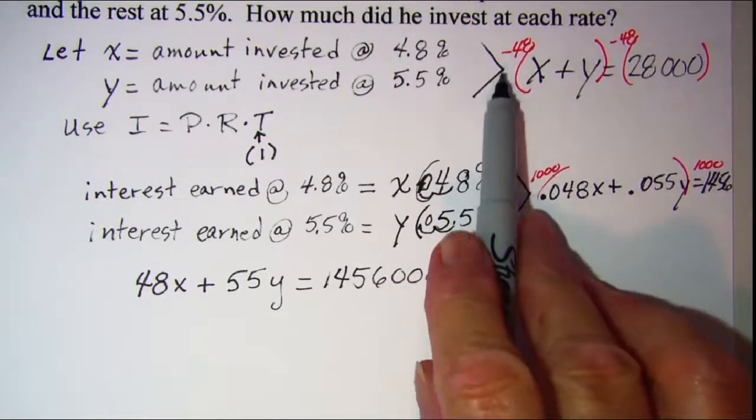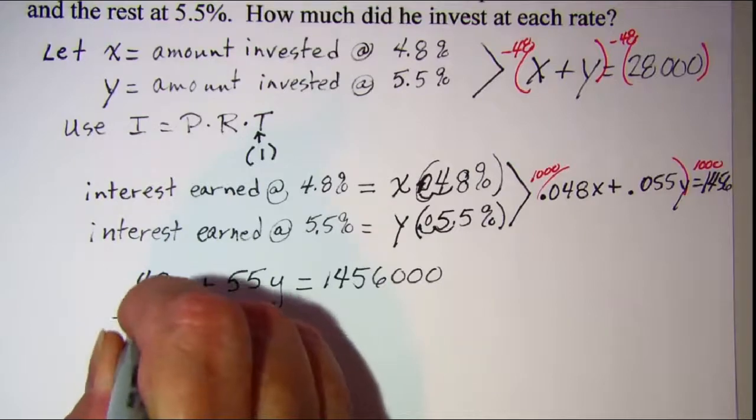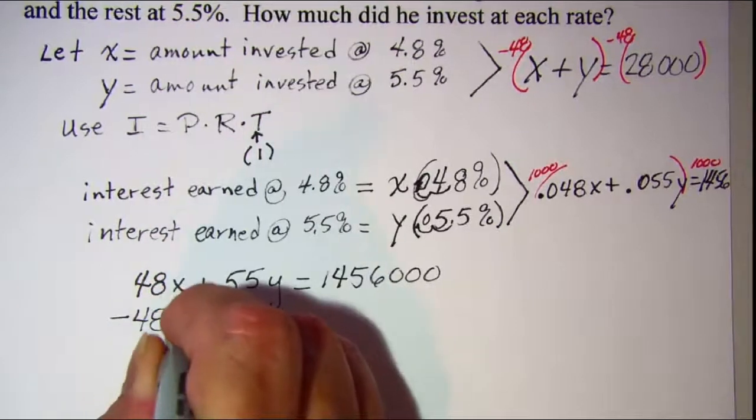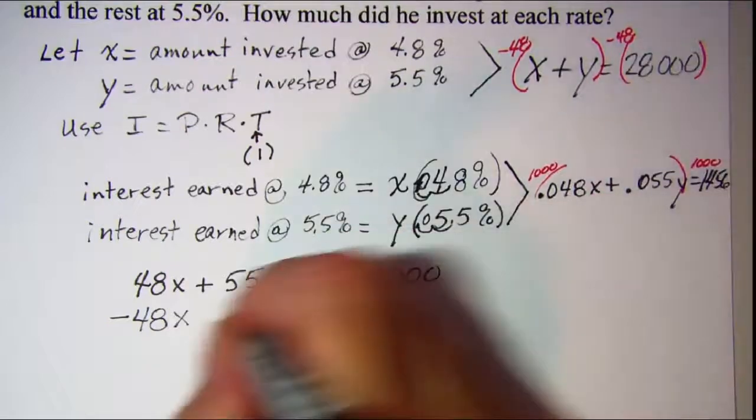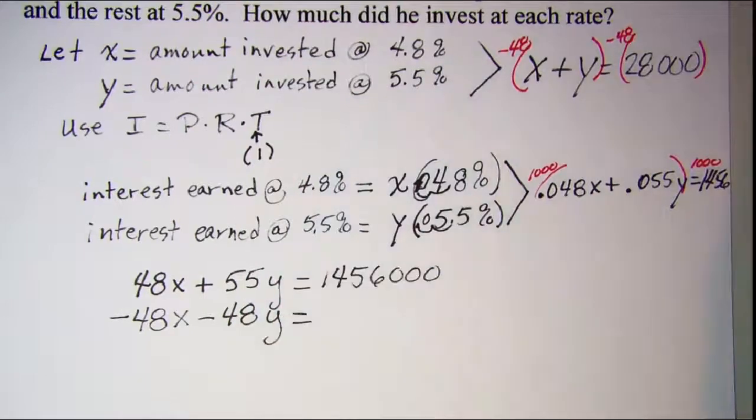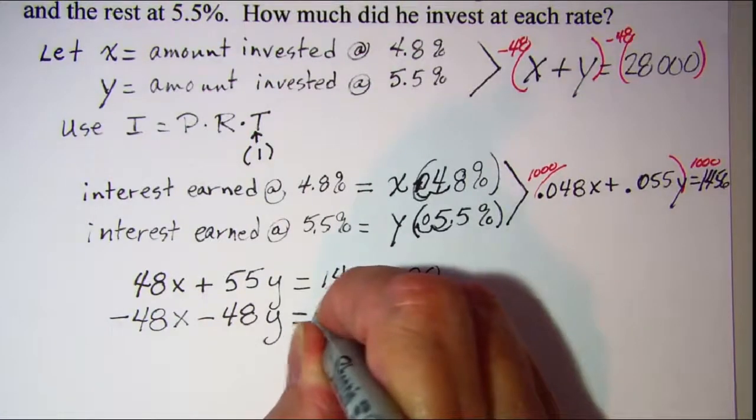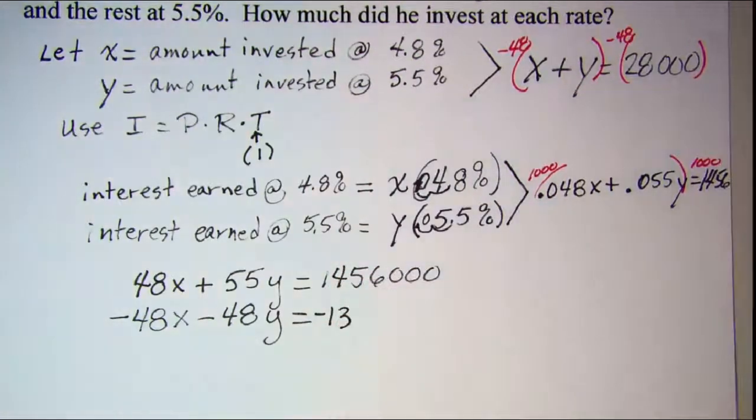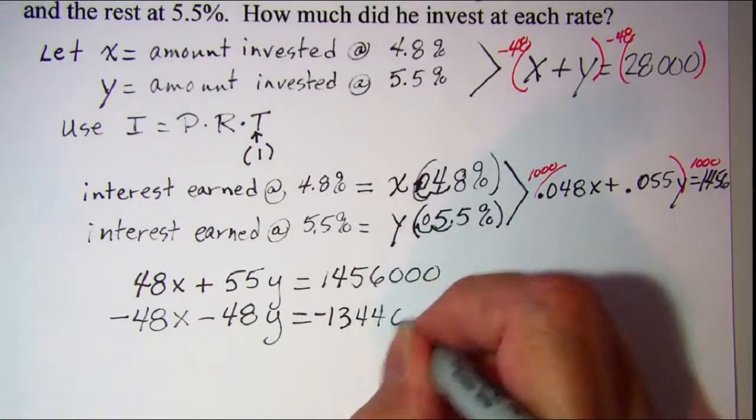So this will be negative 48x and then distribute there negative 48y equals negative 1,344,000.